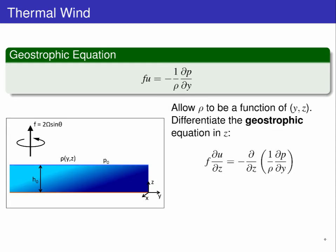Next, we take the vertical derivative of the geostrophic equation. This gives us the vertical change in u times the Coriolis parameter as equal to the vertical change of one on density times the horizontal pressure gradient.